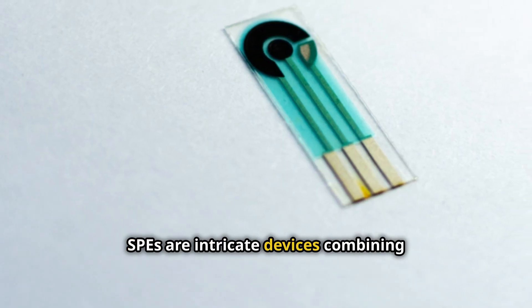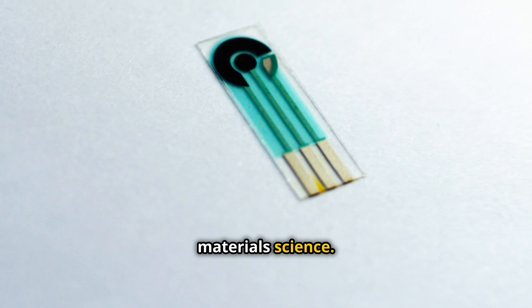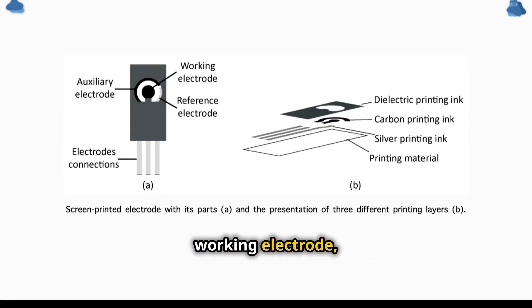SPEs are intricate devices combining precision engineering with cutting-edge materials science. At their core, SPEs consist of three main components: a working electrode, a counter-electrode, and a reference electrode.